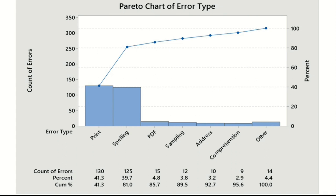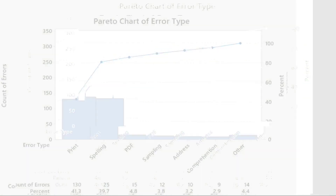So if a team leader has to create a training plan, he will create it for print errors and spelling mistakes only, and will be able to cover 81% of the problem. He will not create a training plan for the entire set of error types.